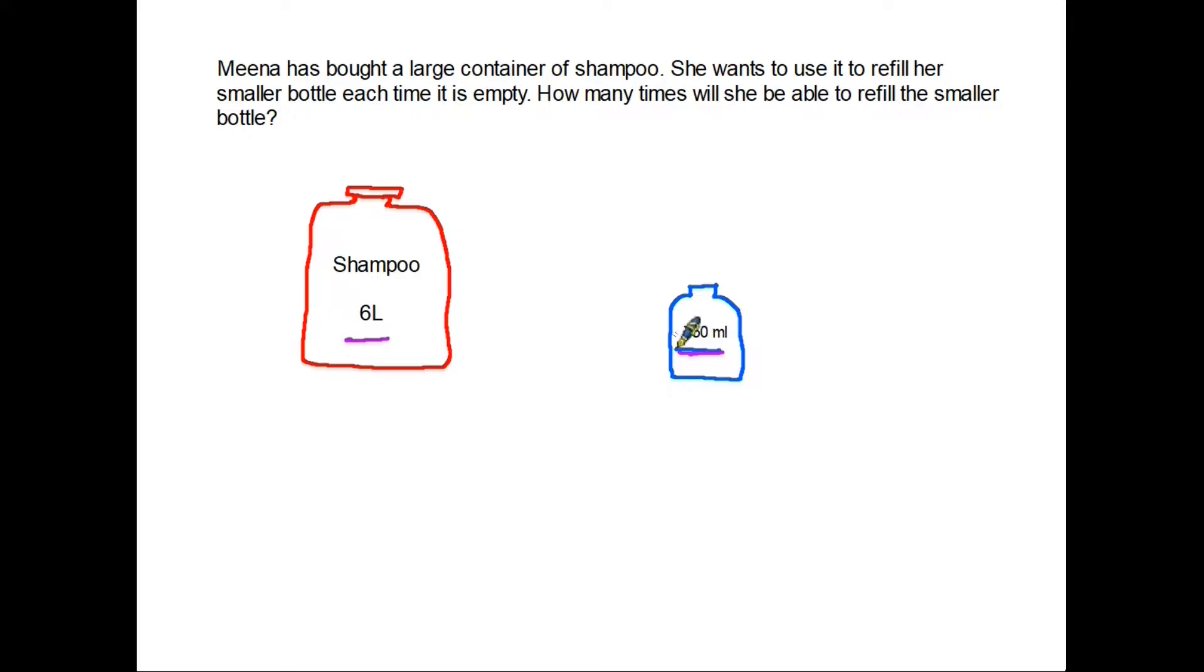Why would I do it this way? Well, if I do it the other way, I'm going to end up with decimal points and that just makes things a little bit more tricky. If we have six liters, we know that in order to convert to milliliters we have to multiply by a thousand, so in fact the larger bottle is six thousand milliliters.